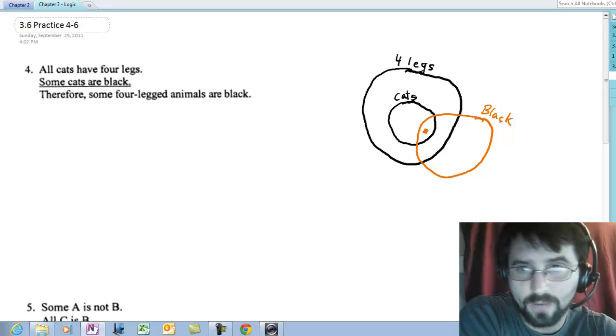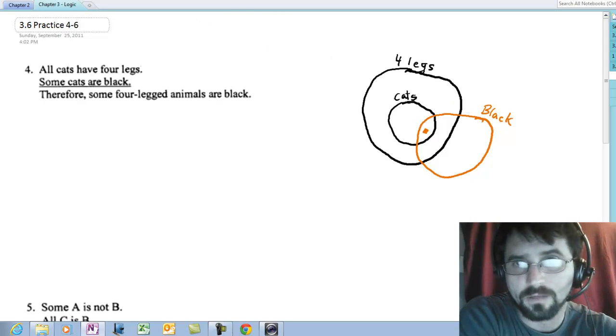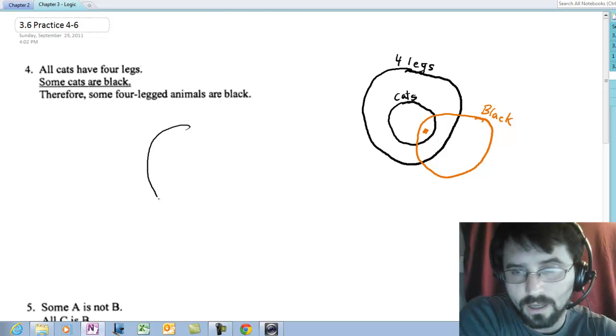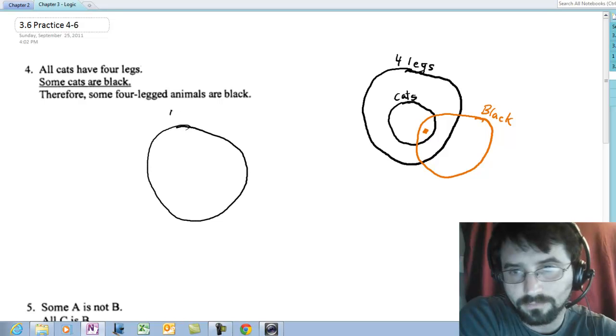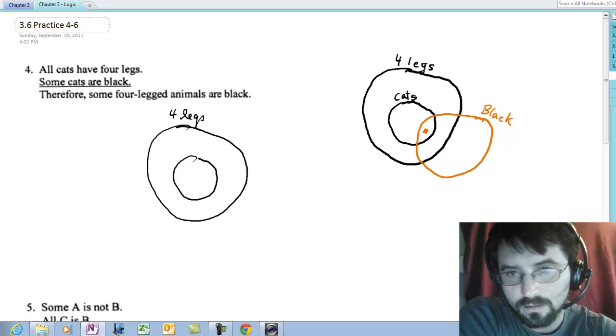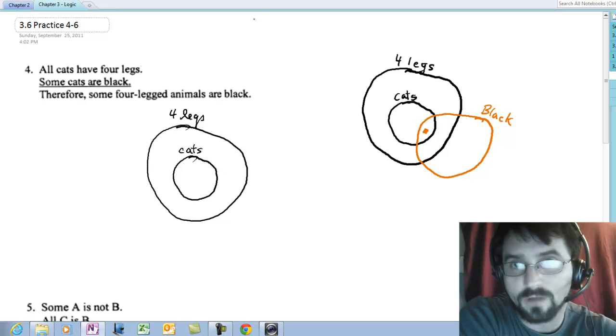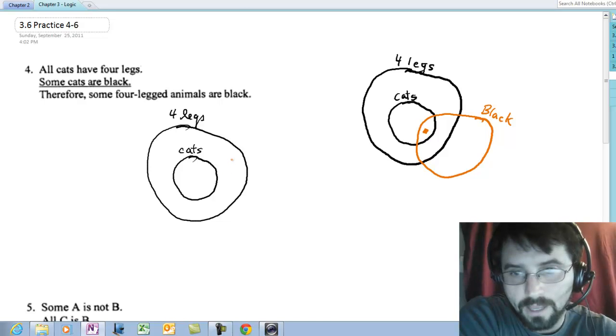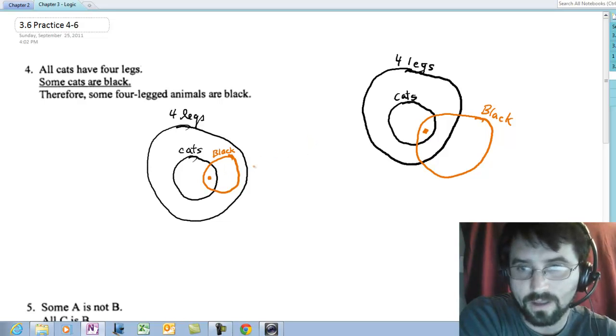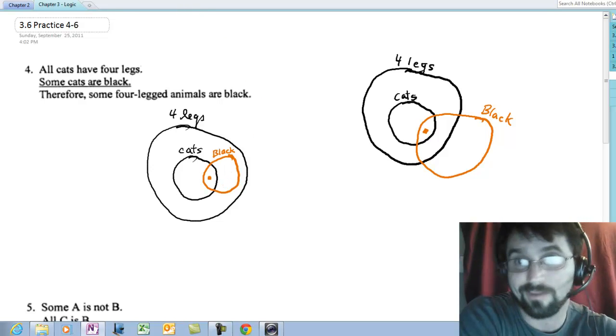Is there any other way I could have drawn this? Absolutely. I could have also drawn it like this. I could have drawn cats like this, and I could have drawn black like this. And then I could have put one in there to show that there's at least one cat that is also black.